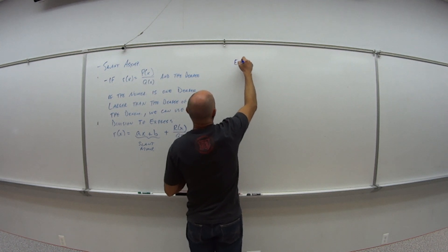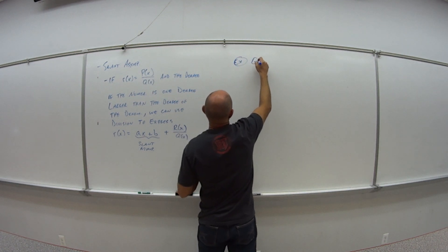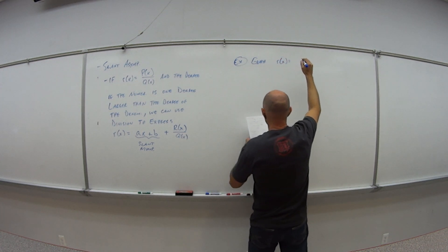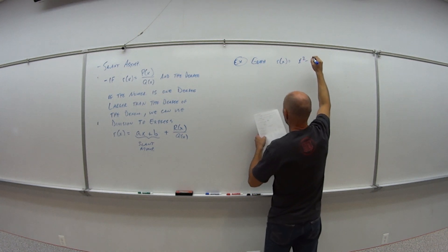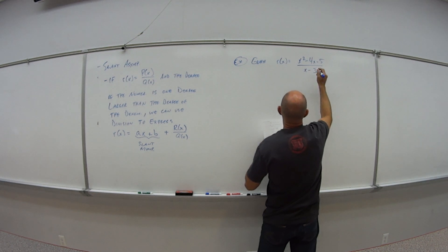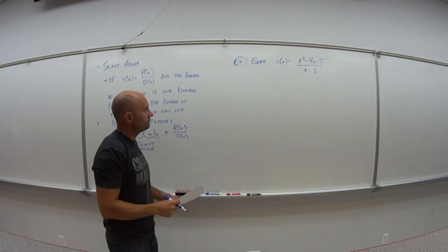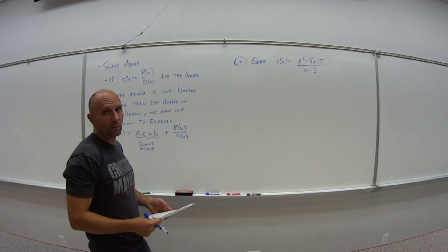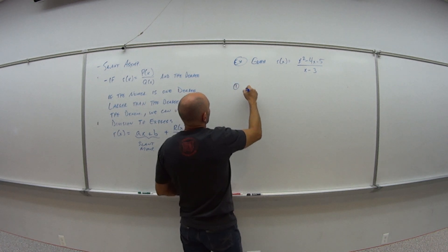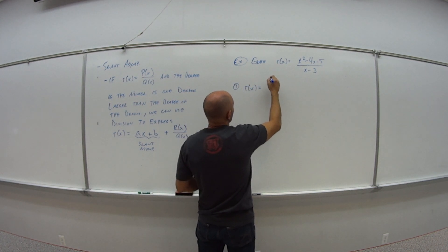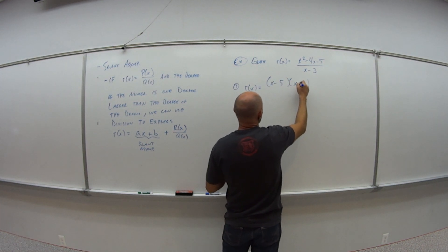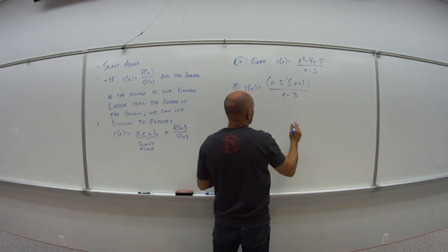So let's look at an example. Let's graph, or let's sketch maybe is a better word, but let's graph r of x is equal to x squared minus 4x minus 5 all over x minus 3. So, what was our steps before? Step one, factor. So I'm going to rewrite r of x as x, this factors into what? This goes into x minus 5, x plus 1, all over x minus 3.